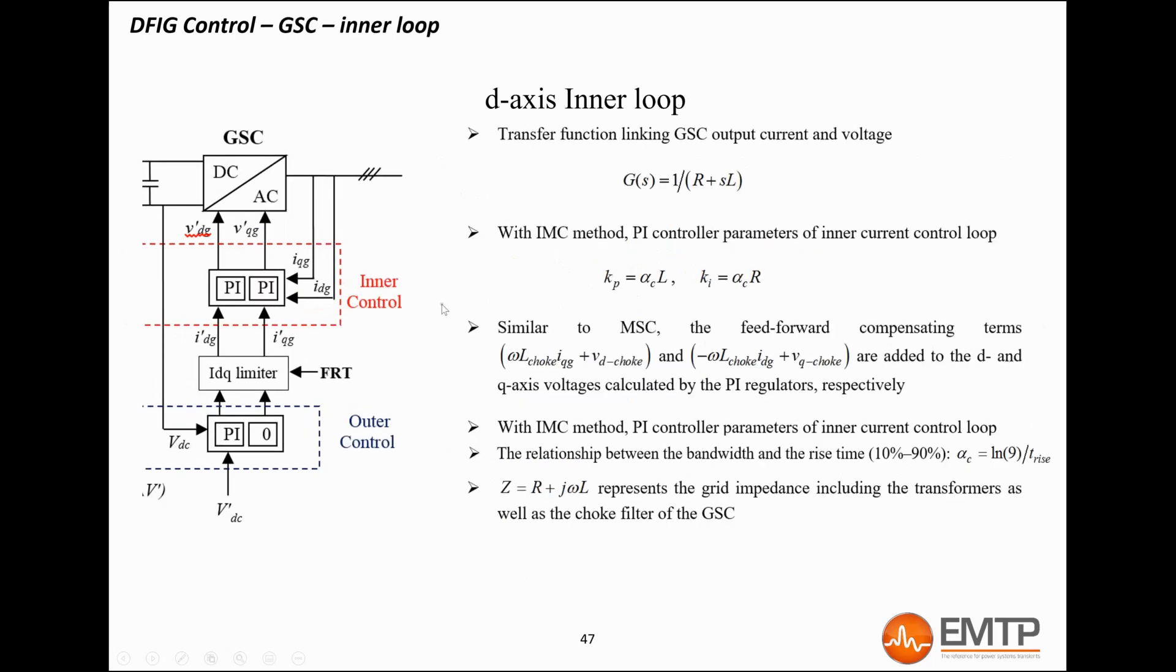For the grid-side converter, the gains of the inner loops depend on the total impedance seen by the converter. The transfer function is shown here, where R and L are the resistances and inductances of the filter choke, the converter transformer, the park transformer, and the grid Thevenin impedance combined. In the generic model mask, users can set the rise time, which determines the inner loop speed. It is typically set to 10 milliseconds. The voltage control is at the converter terminal, but the voltage measured is after the choke filter. Therefore, and similarly as the machine-side converter, the feed-forward compensation is done before putting the converter voltage reference back to the ABC domain.